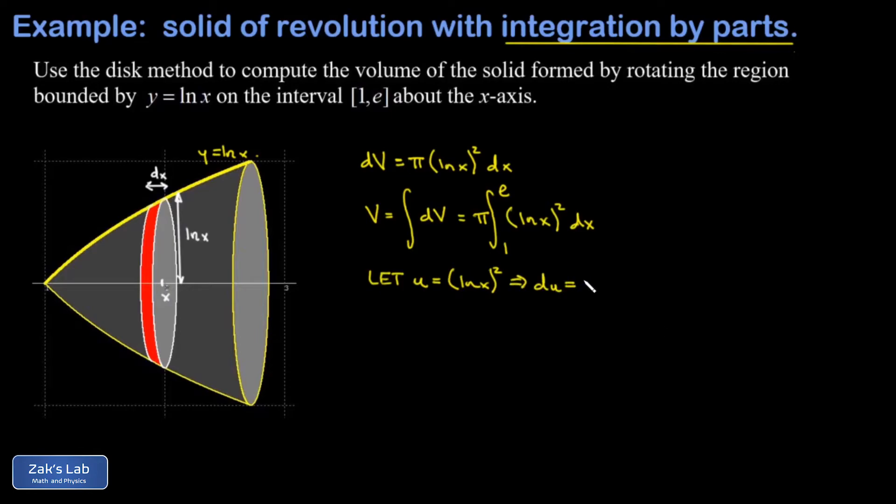The derivative of this is going to knock down the power on the natural log function, so I end up with two natural log x. The chain rule requires that I tack on a one over x, but this is a much better function than what I started with because the natural log is only raised to the first power and the one over x piece is just a straightforward rational function.